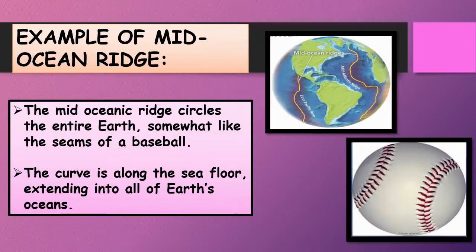About 90% of the mid-oceanic ridge system is under the ocean. This system of mountains and valleys criss-crosses across the globe. As you can see in the given picture, it is just similar to the stitches in a baseball — formed by the movement of the earth's tectonic plates. The ridge curves along the seafloor, extending into all of the earth's oceans.